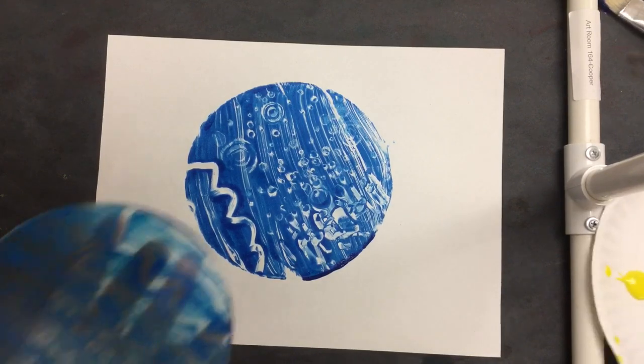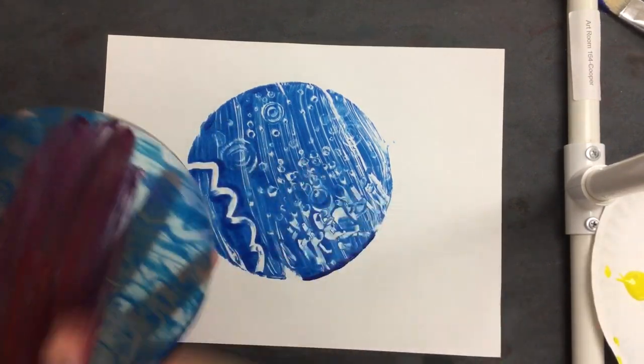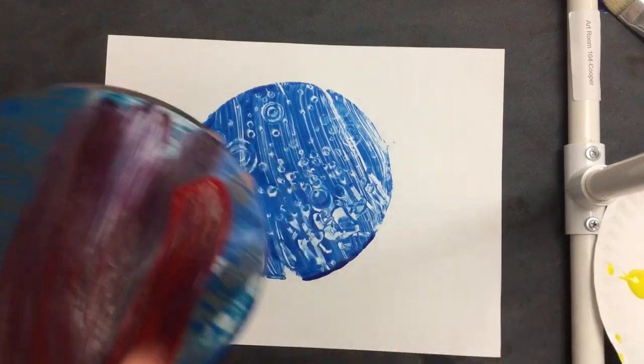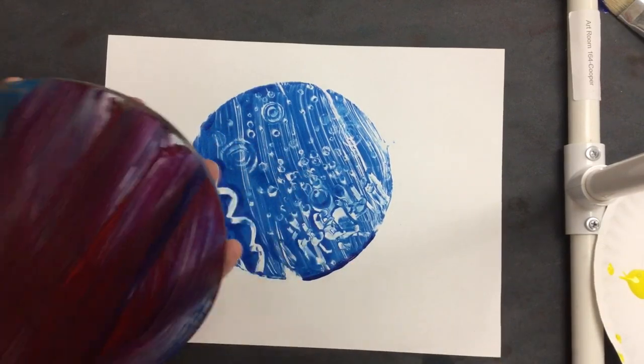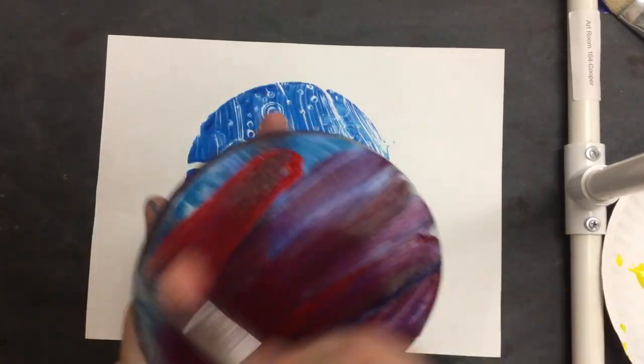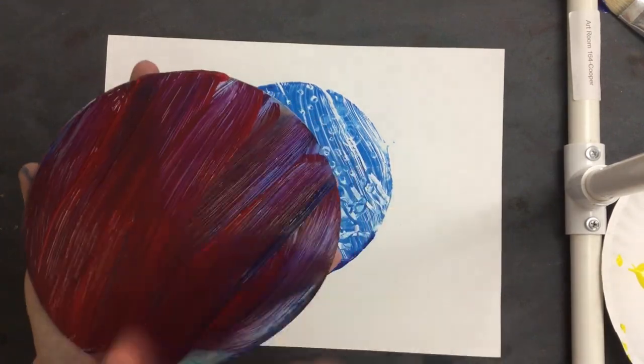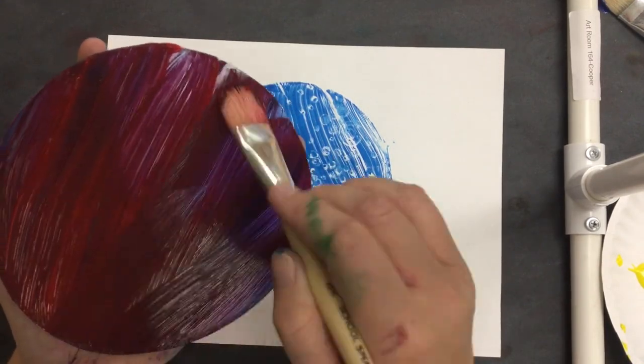The fun thing about jelly prints is that you can layer your prints on top of each other. So that blue one's a one-time print, but I can use it as a background piece and do something else on top of it.